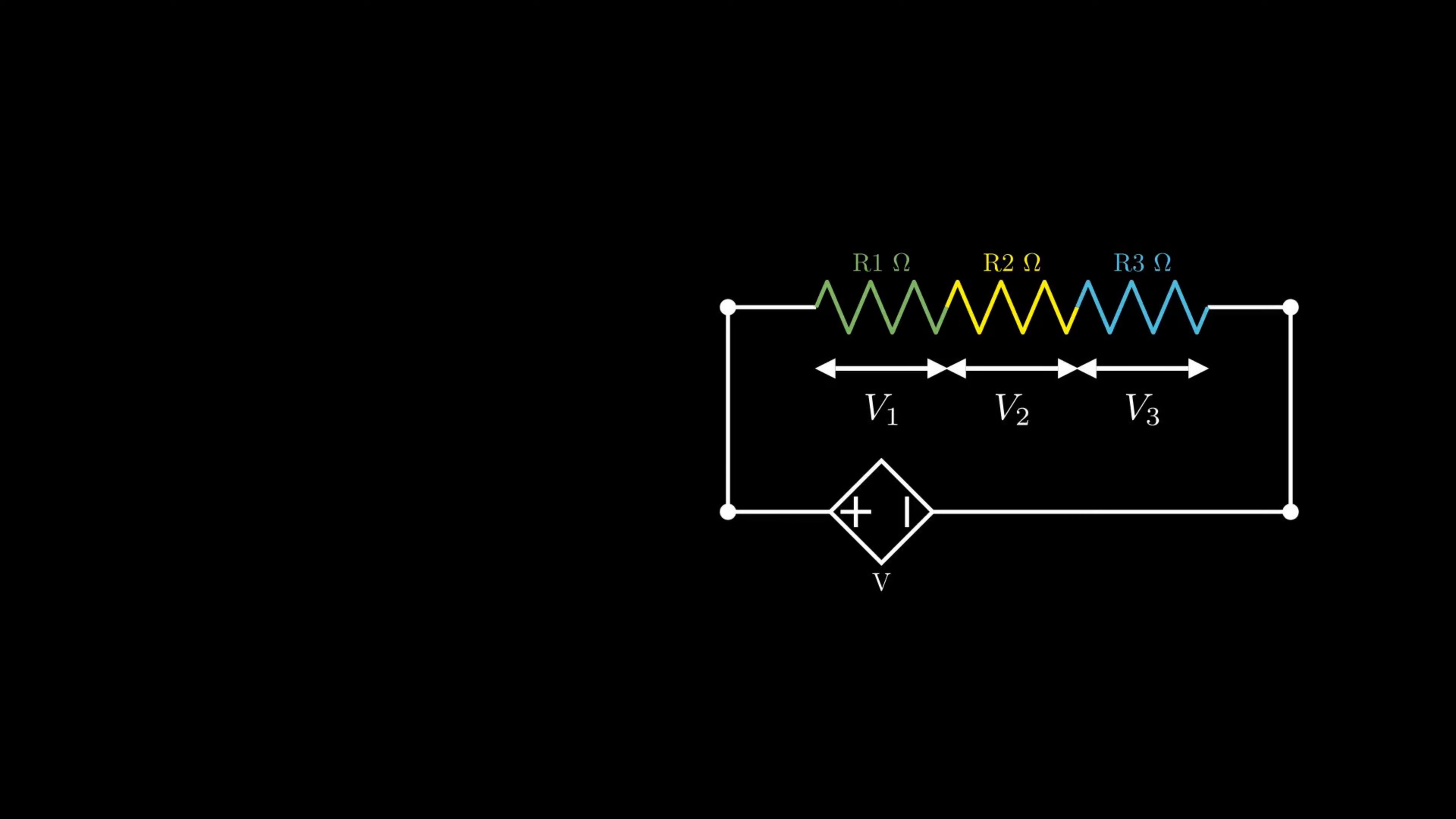Let V1, V2 and V3 be the individual potential drops across R1, R2 and R3 resistors. Mathematically V equals V1 plus V2 plus V3, where V is the total potential difference.